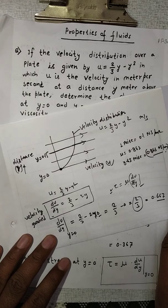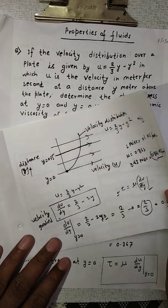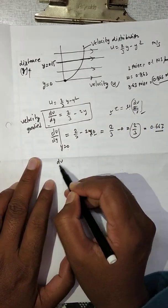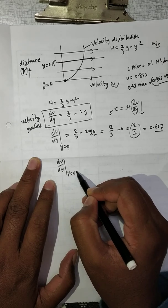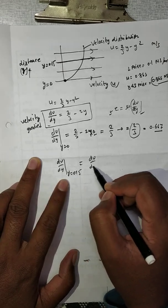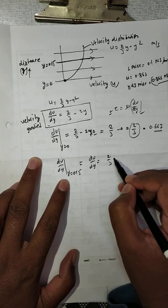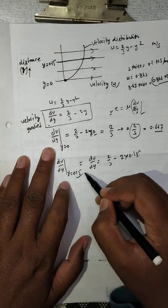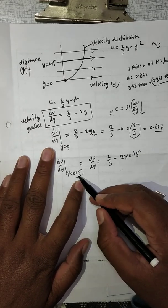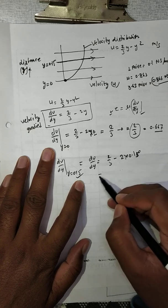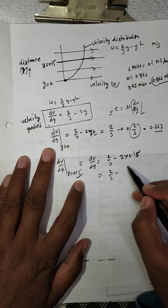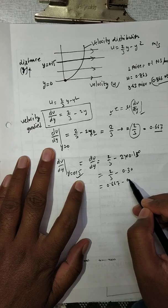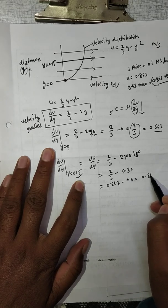Now at y = 0.15: du/dy = 2/3 - 2y = 2/3 - 2×0.15 = 0.667 - 0.30 = 0.367. So du/dy at y = 0.15 equals 0.367.